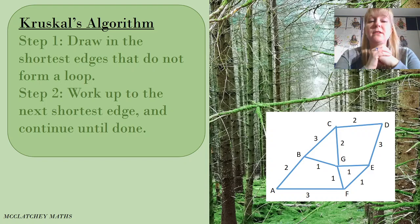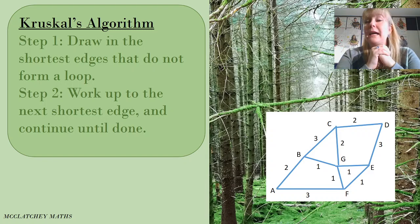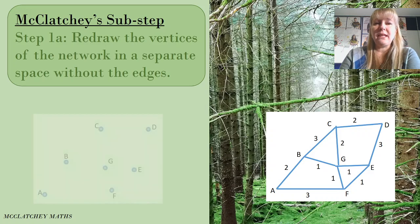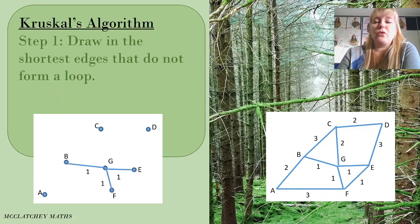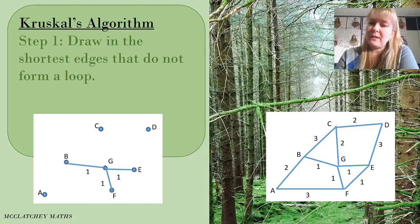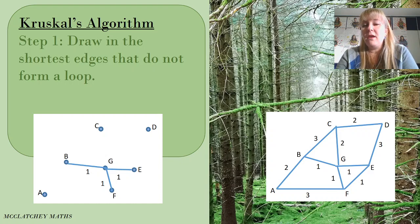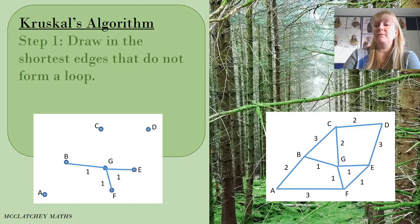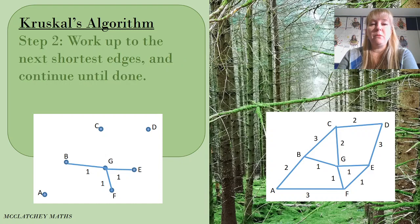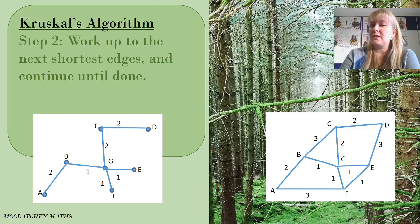Kruskal's algorithm is a little different. We draw in edges that are short and don't make a loop, working up from the smallest edge to the largest. We start by redrawing the vertices without edges. Then with Kruskal's, I look at the graph for the lowest numbers. I draw in all the edges with weight 1 as long as they don't form a loop — so BG, GF, and EG for example. Then I move up and draw the 2s: CD, CG, and BA.